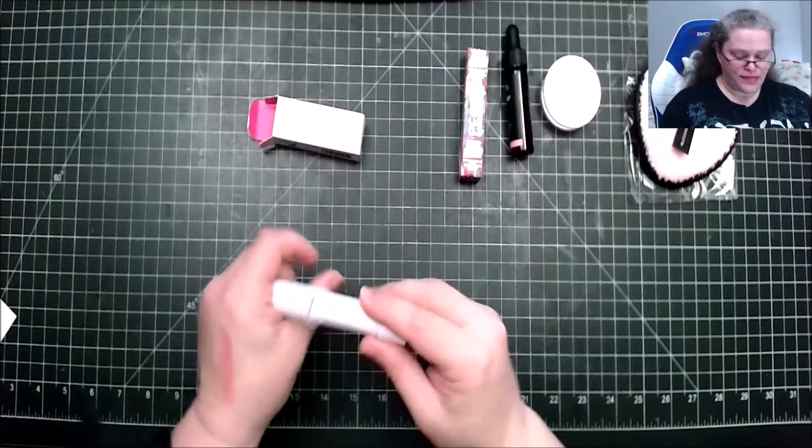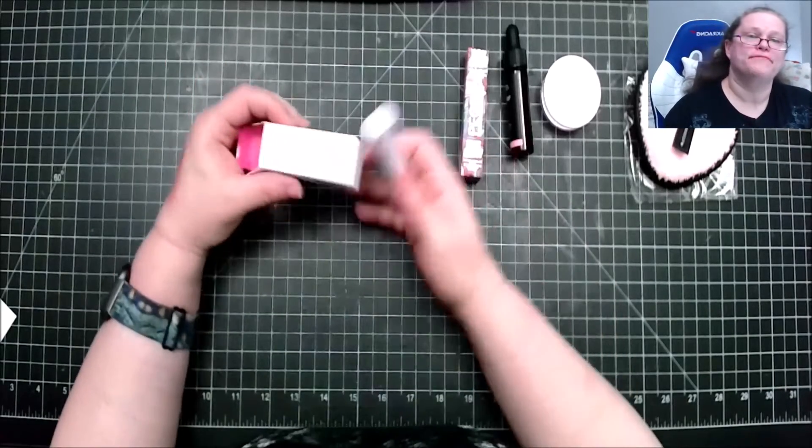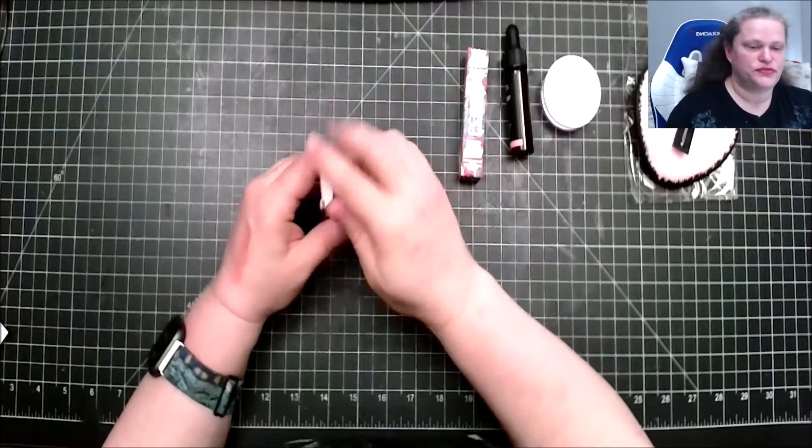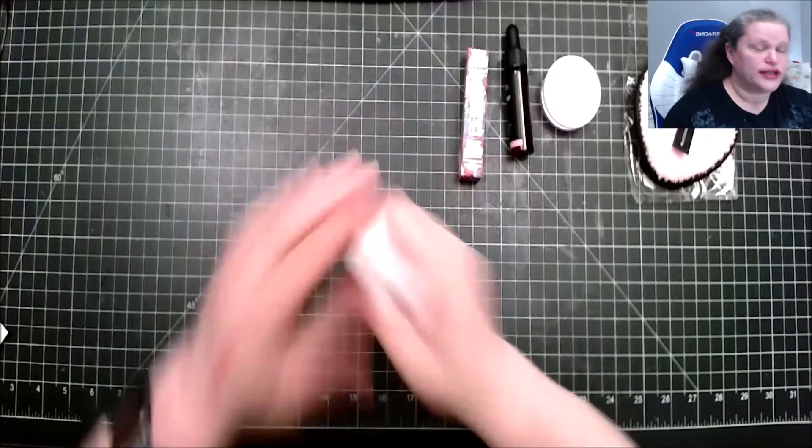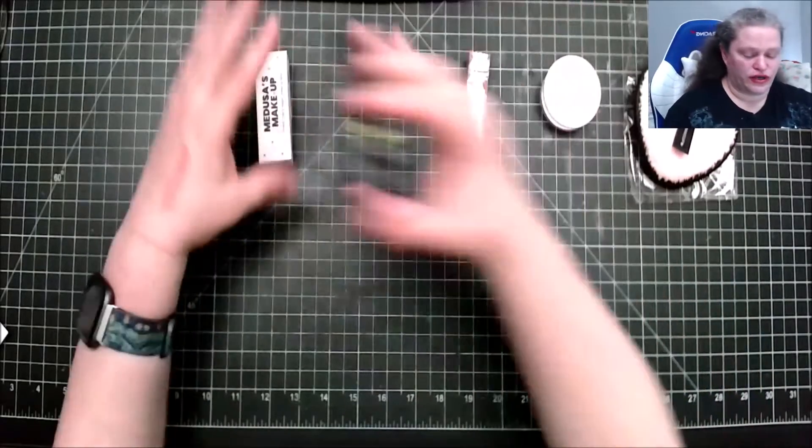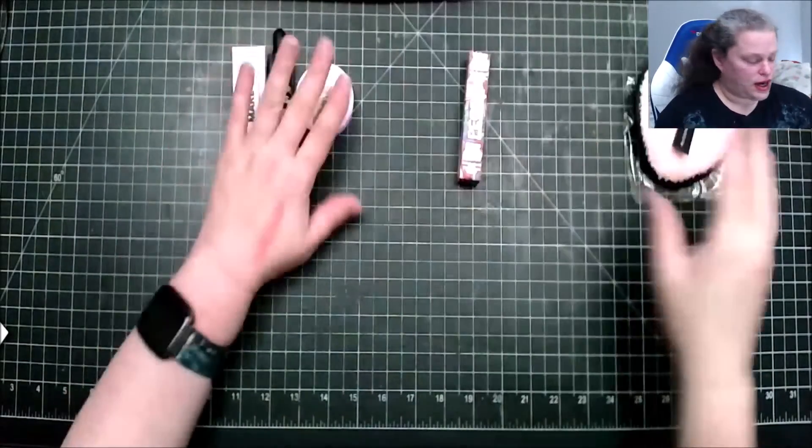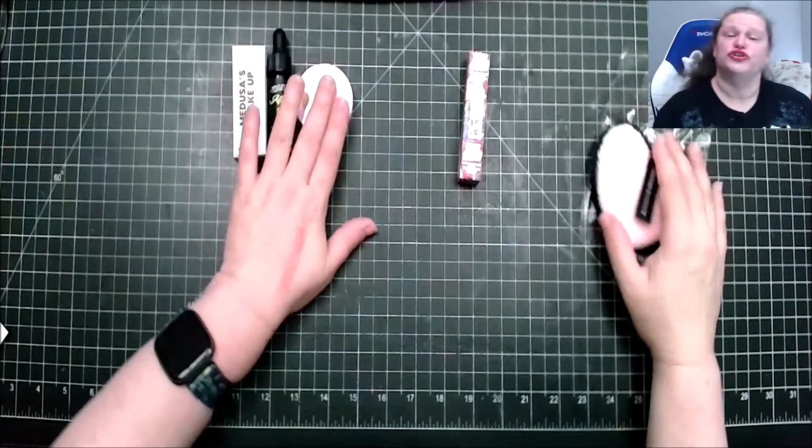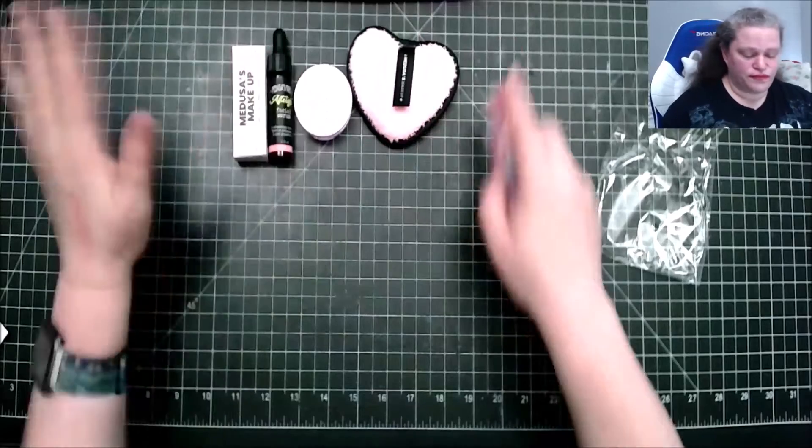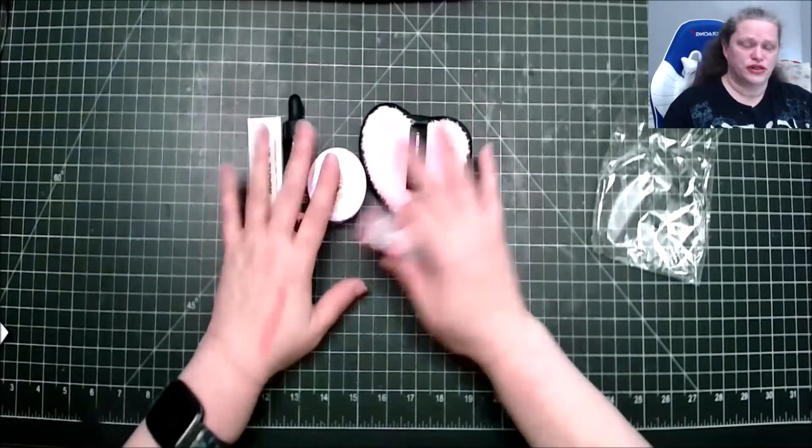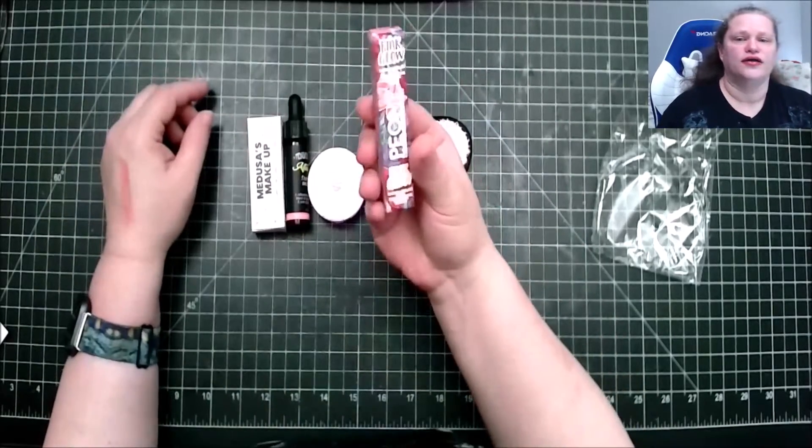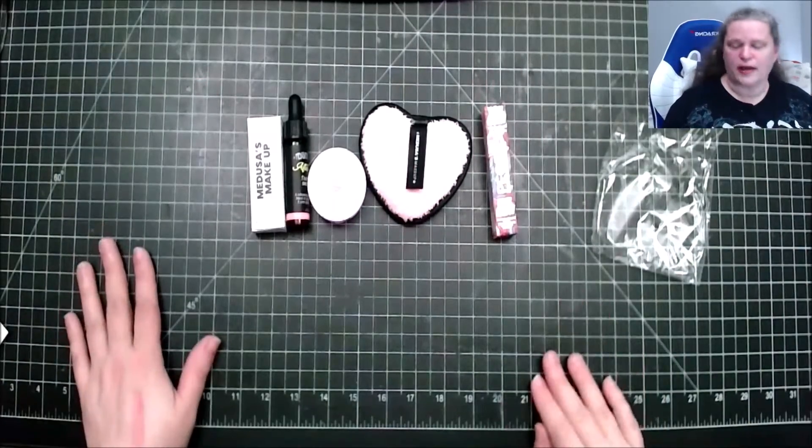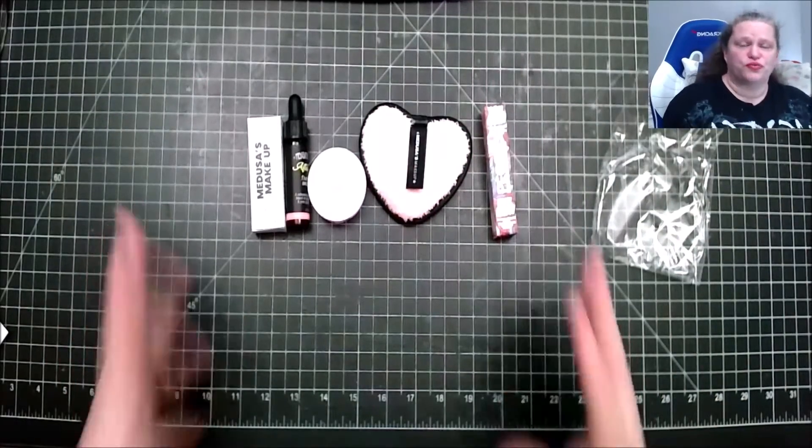All right, so we got a lip tint, we got a face serum, eyeshadow, excuse me, a makeup remover. This is all Medusa's, and then we got a highlighter from Peonye. What did I think? I actually like the box. It's really nice.